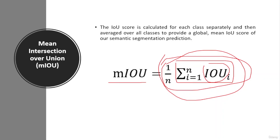The mean intersection over union is simply the average intersection over union across all classes in the dataset. It is a useful measure because it takes into account both the accuracy and the spatial relationship between the predicted and the ground truth segmentation.